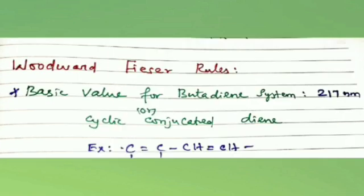The Woodward-Fieser rule is used for calculating the lambda max, that is, the wavelength of maximum absorption. This is a very important area of UV-visible spectroscopy.